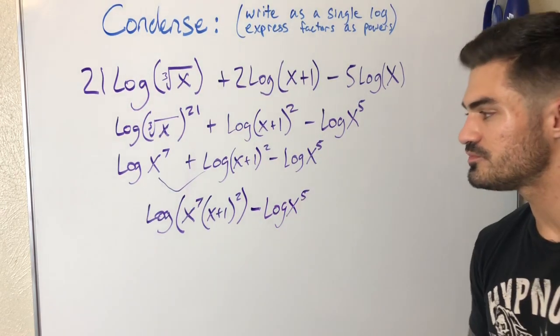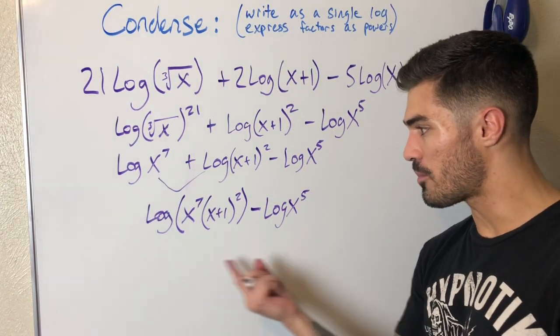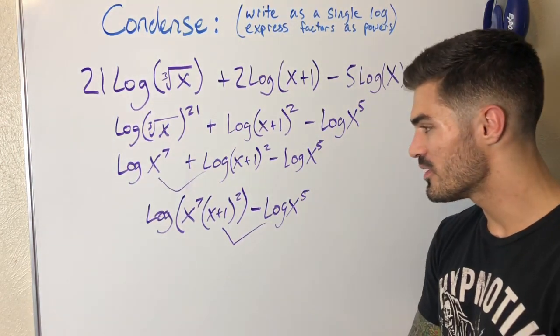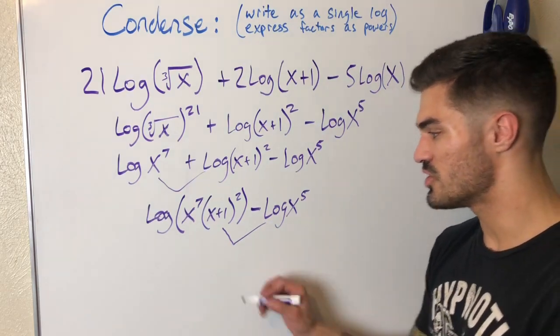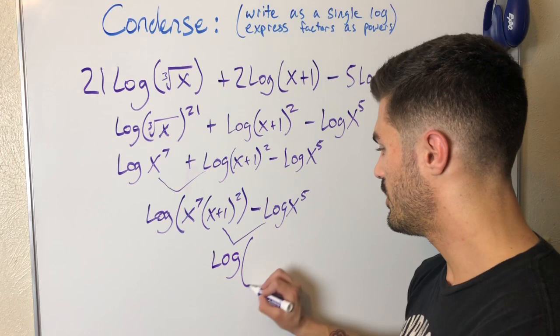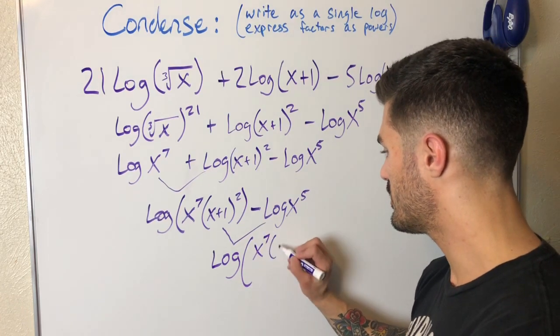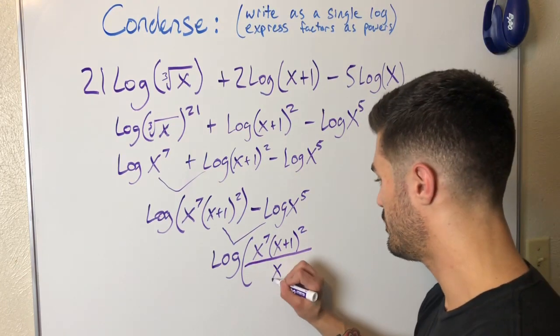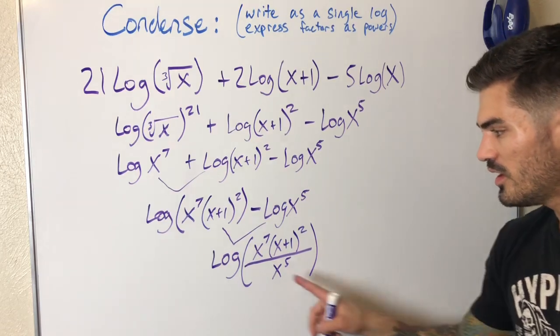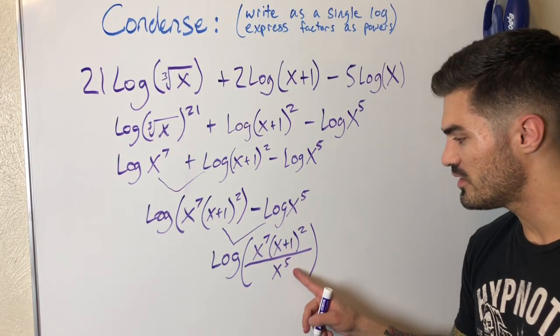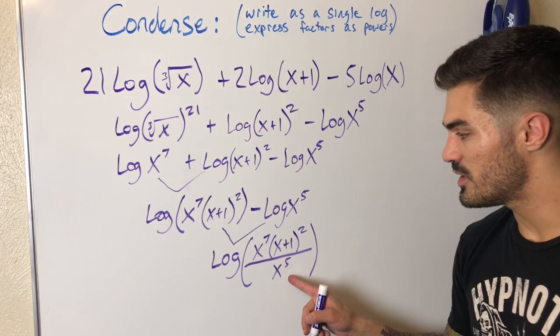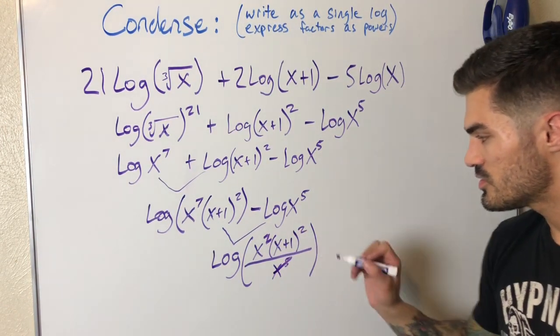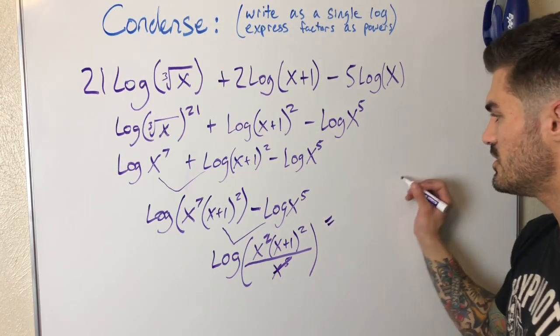Okay, now I have log minus log, both the same base, so I can do one more combining step. And what is it going to be? From subtraction it goes to division. So my last step is log, what, x to the seventh x plus one—everything in here is up top, right—squared, all over x to the fifth. Oh wait, there's actually some simplifying I can do. x to the seventh divided by x to the fifth, I can do top exponent minus bottom exponent, so I can actually cross this out and rewrite this as a two.